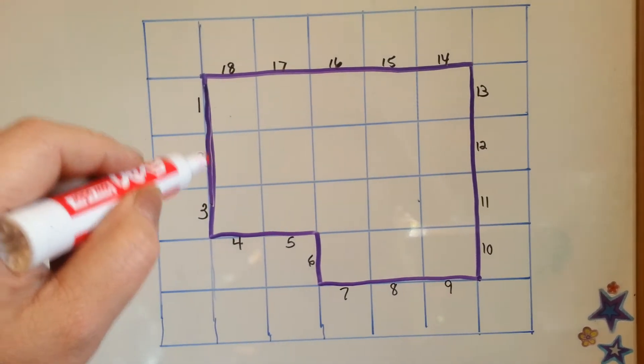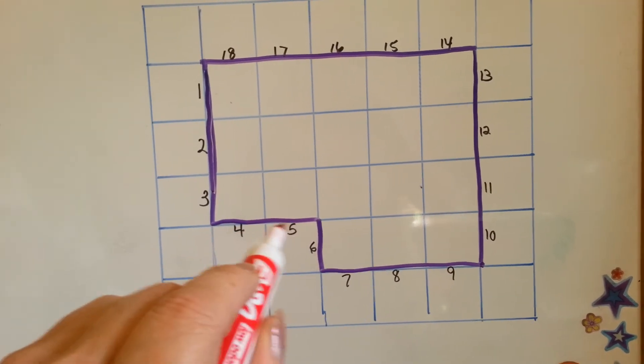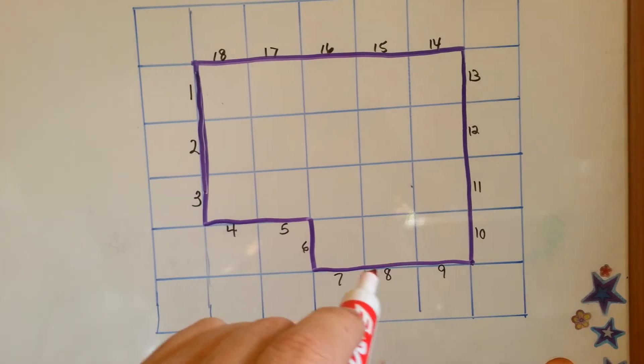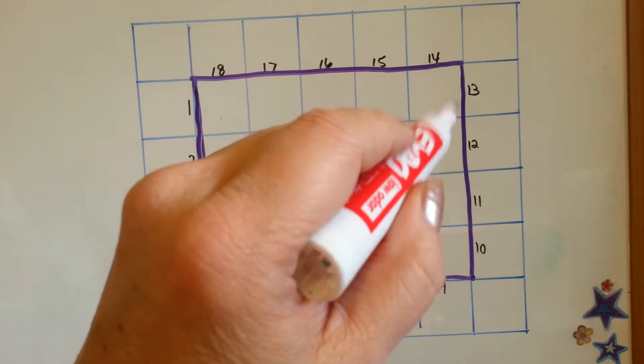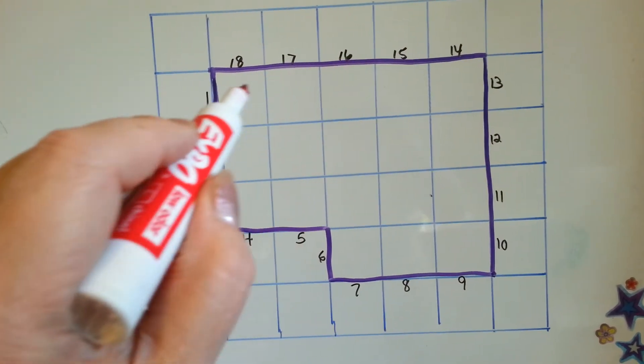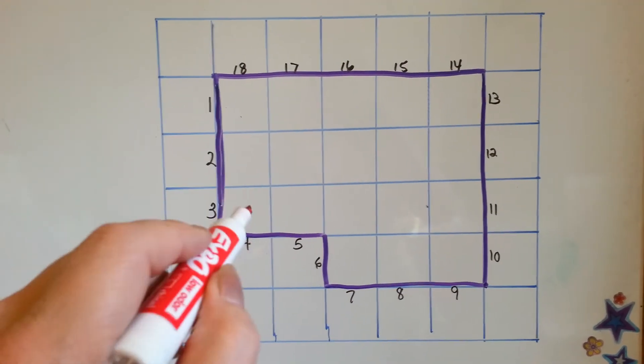1, 2, 3, 4, 5, 6, 7, 8, 9, 10, 11, 12, 13, 14, 15, 16, 17, 18 lines. So the perimeter on this would be 18.